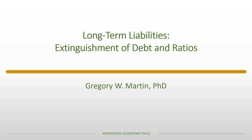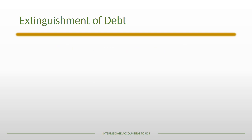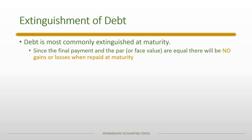In this lecture I'm going to talk about the extinguishment of debt and also some ratios that deal with long-term liabilities. First we're going to cover the extinguishment of debt. Most often debt is going to be extinguished at maturity, and in that case the final payment and the par value or face value of the debt are equal, so there will be no gains or losses when the debt is repaid at maturity.